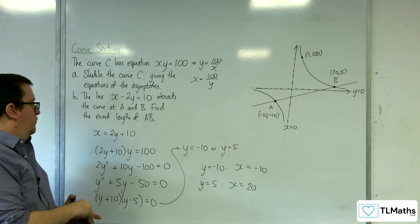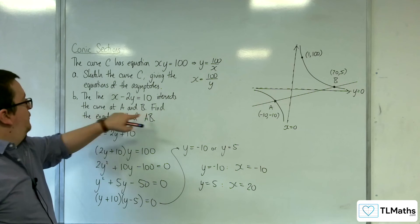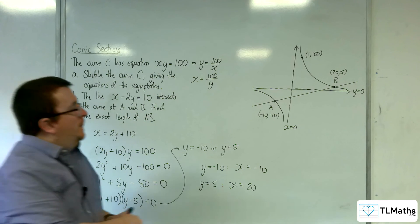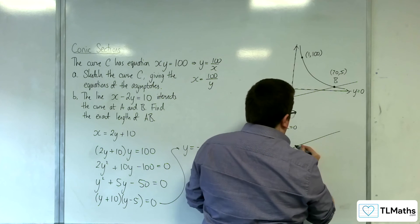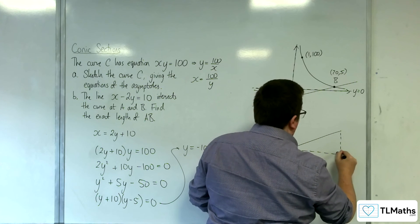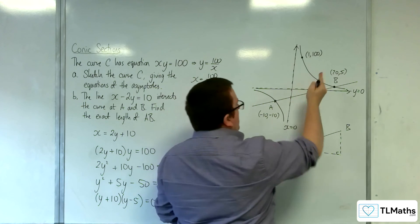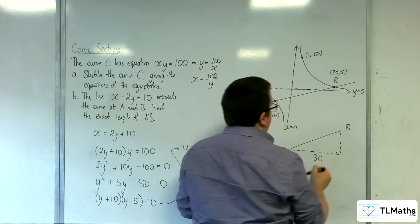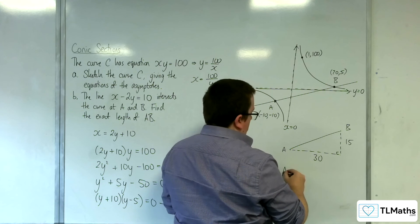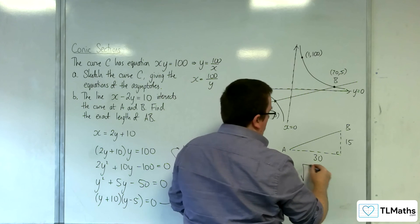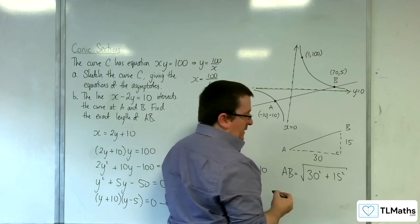The question says, find the exact length of AB. So we've now got this length here, and I'm going to draw that as a right-angled triangle. We're going from minus 10 up to 20, so that's a length of 30. And from minus 10 up to 5, so that's 15. So the length of AB is going to be equal to the square root of 30 squared plus 15 squared.